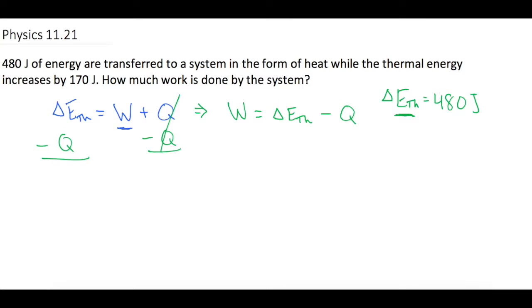And then they say that the thermal energy of the system Q increases by 170 joules. So now we just have to plug these guys in, and work is equal to 480 joules minus 170 joules, which gives us 310 joules as work.